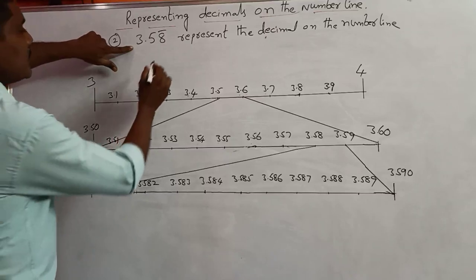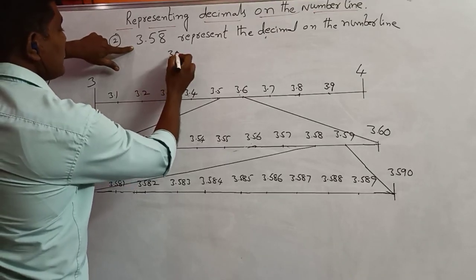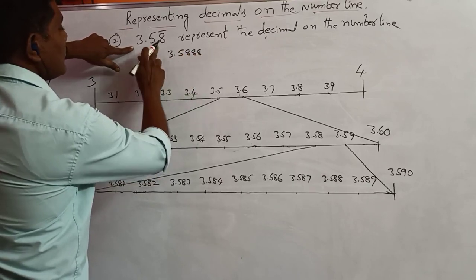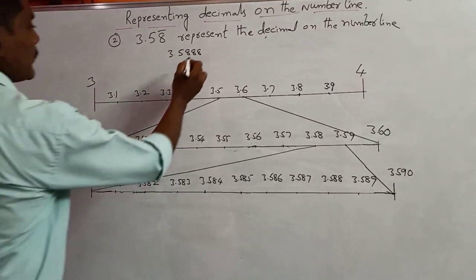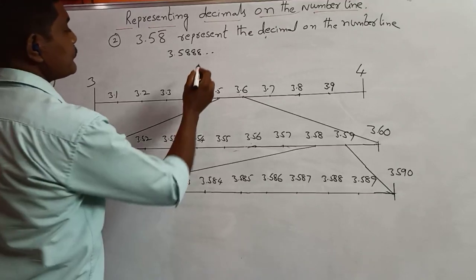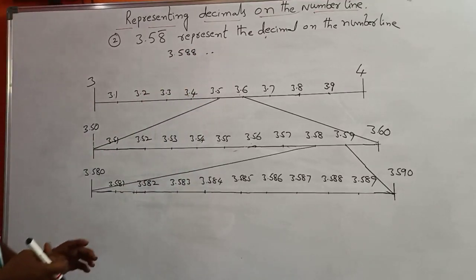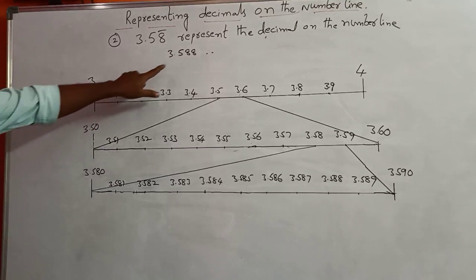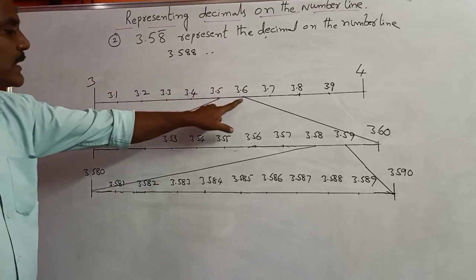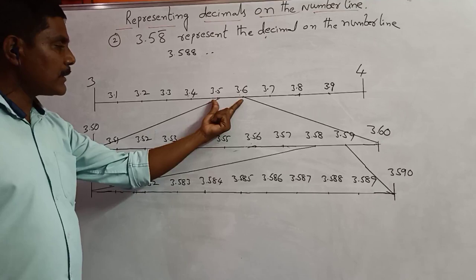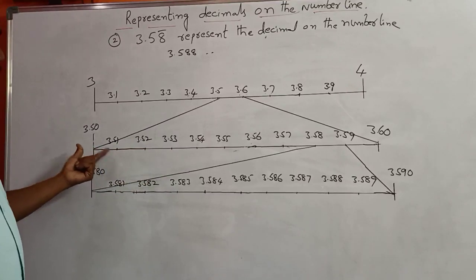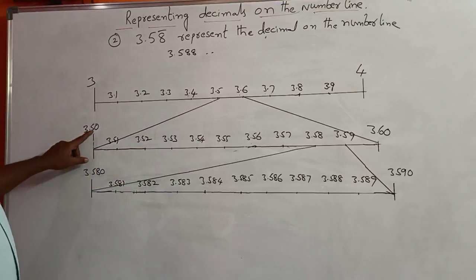Next, observe the given decimal number 3.5888... — 8 bar means 8, 8, 8, 8, so on. I take up to 3 digits only. So at 3.5, we take the next decimal which means 3.6. I divide 3.5 to 3.6 into 10 equal parts, which are equal to 3.50, then 3.51.